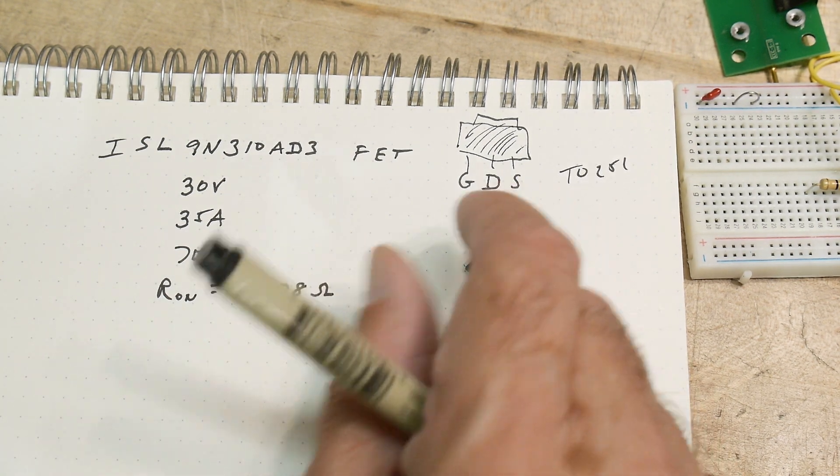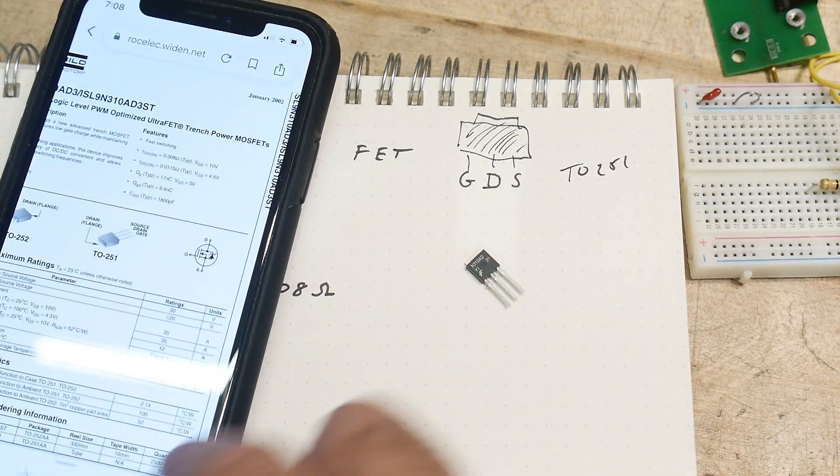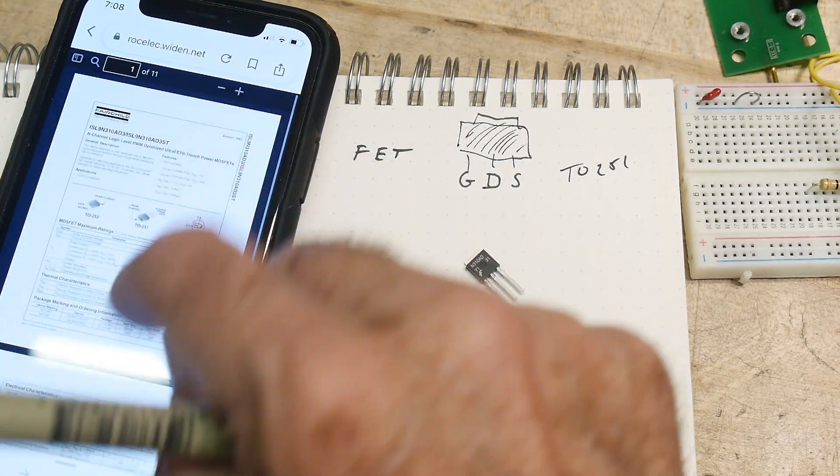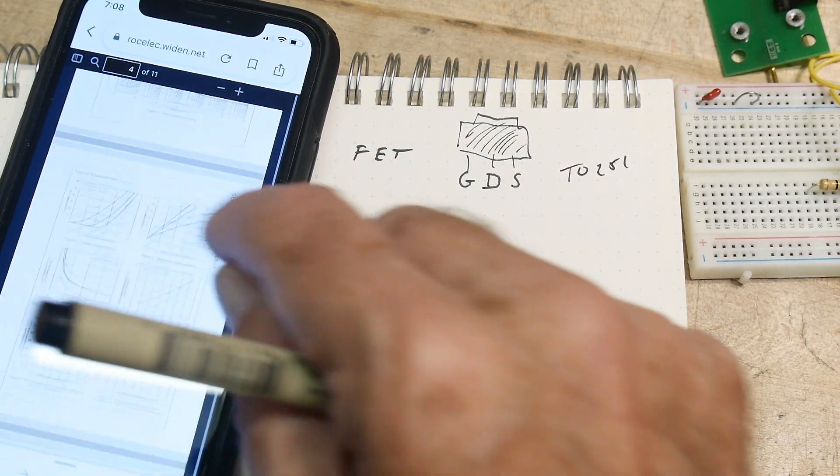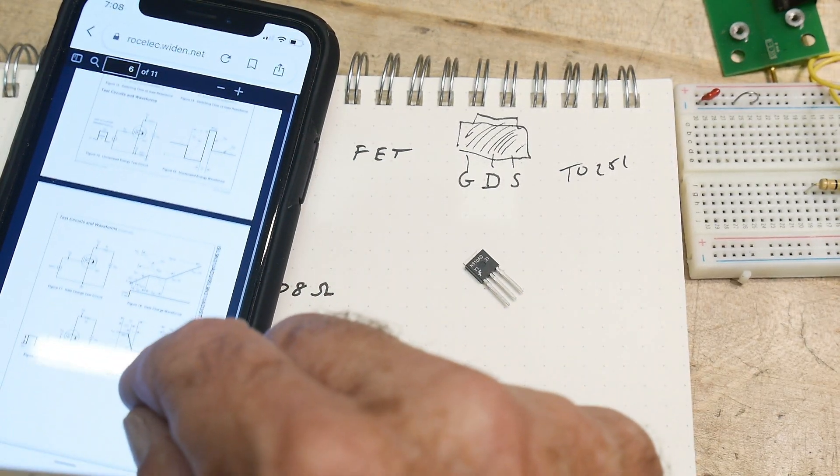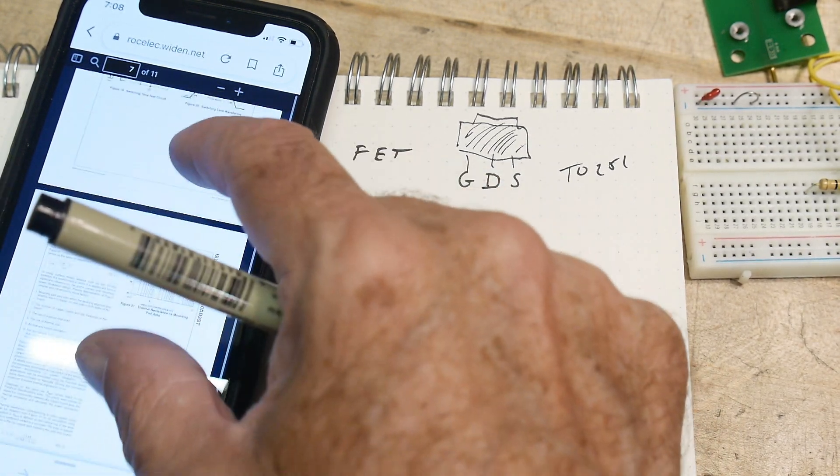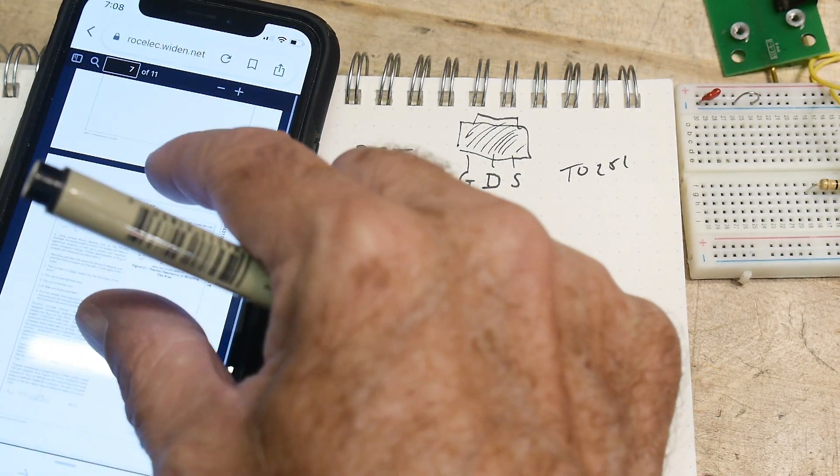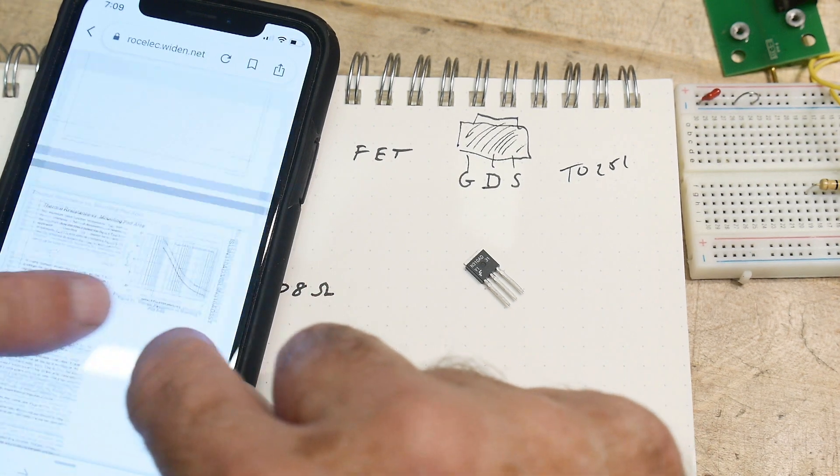In the data sheet, it talks about putting it on a piece of copper. Okay, there's a graph in here. Here's the graph. Let's see here if it can make it big. There it goes.